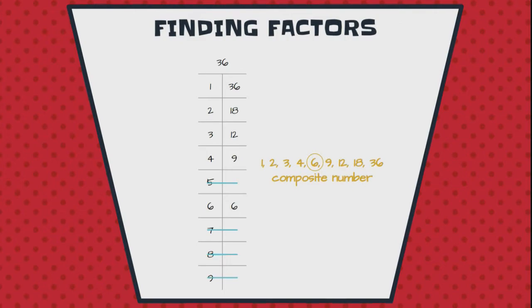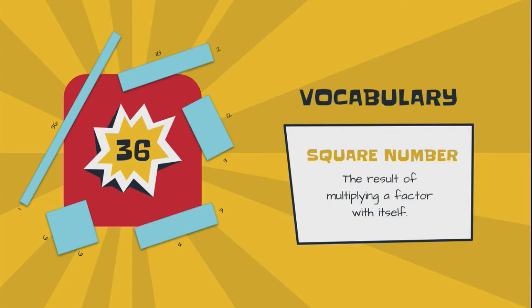So, we have a list. One, two, three, four, six, nine, twelve, eighteen, and thirty-six. It is definitely a composite number, okay? It has certainly more than two factors. I've circled the six because he's only on the list once, even though he's in the chart twice, right? Six times six is a double. All right, so thirty-six is a special number.